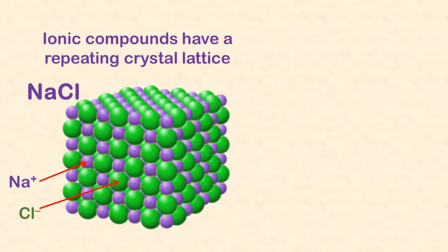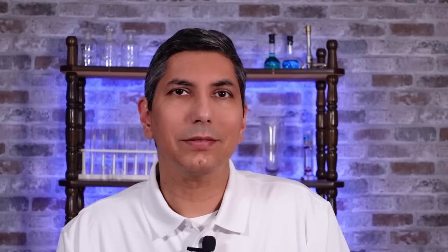Covalent bonds form molecules, which can usually be individual units. However, ionic compounds exist in a three-dimensional lattice, where cations alternate with anions. Metals and metal alloys exhibit metallic bonding, where electrons can move freely, consisting of positive metal ions, surrounded by a sea of electrons.